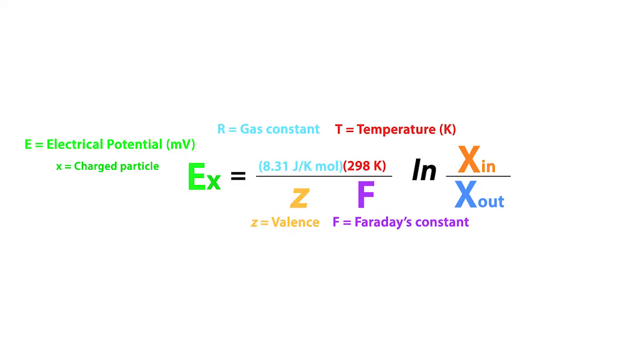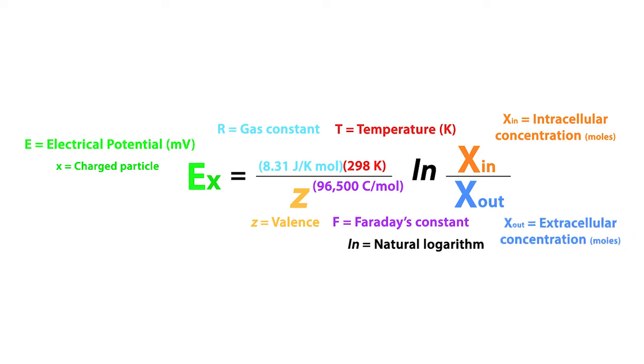F represents the Faraday's constant, which equals 96,500 coulombs per mole. And finally, Ln represents the natural logarithm of X in over X out, where X in represents the intracellular concentration of the charged particle, while X out represents the extracellular concentration of the charged particle. Both are given in moles.